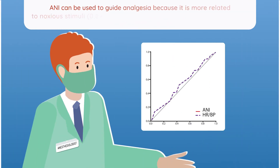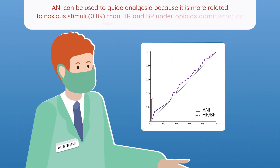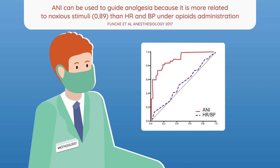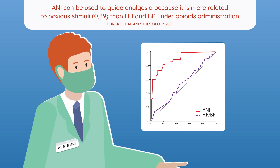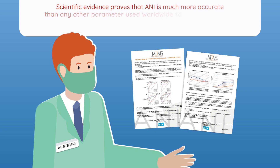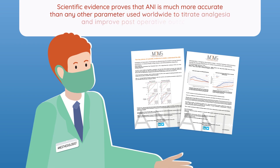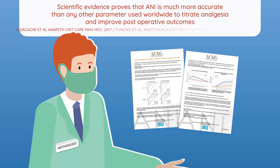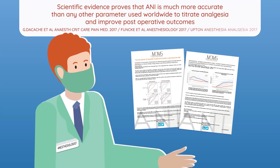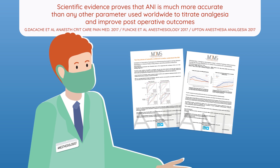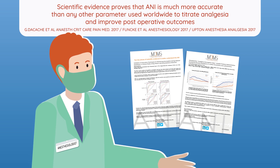Recent evidence shows that when opioids are administered, heart rate and blood pressure are as good as flipping a coin to detect the effect of stimulation, while sensitivity and specificity for ANI is the best in its class to detect nociception, titrate analgesics, and improve outcomes.